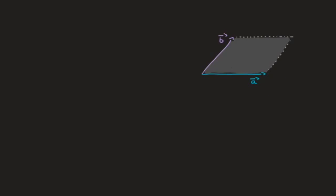In one of my previous tutorials, we had seen how we can use the cross product of two vectors to calculate the area of a parallelogram like the one we see here — a parallelogram formed by two vectors a and b. We had seen that the area was given by the formula: area equals the magnitude of the cross product of a and b.